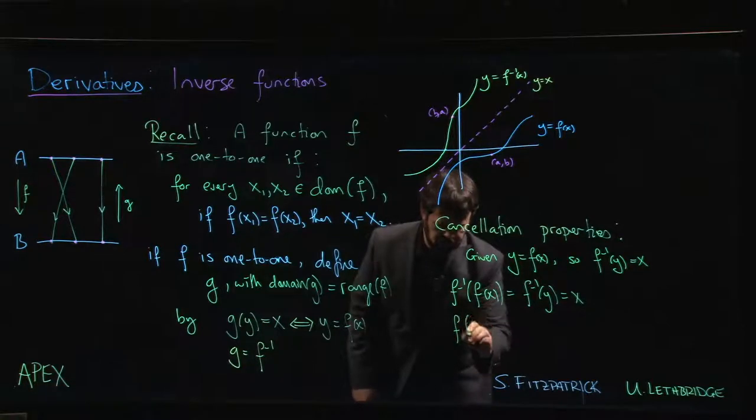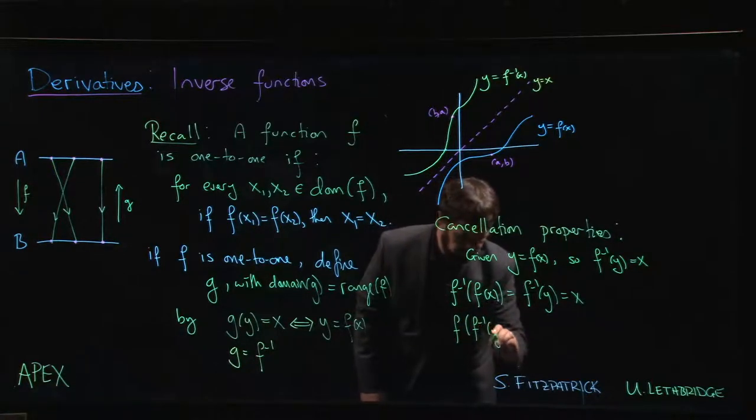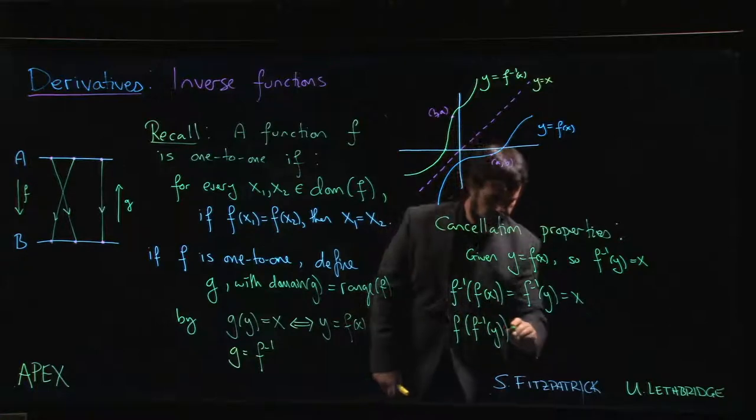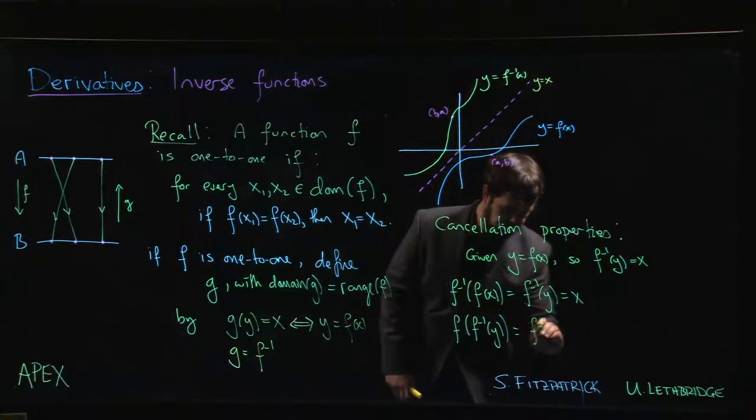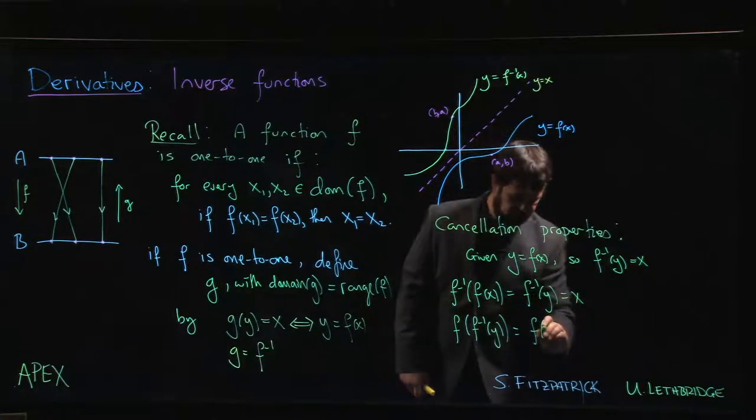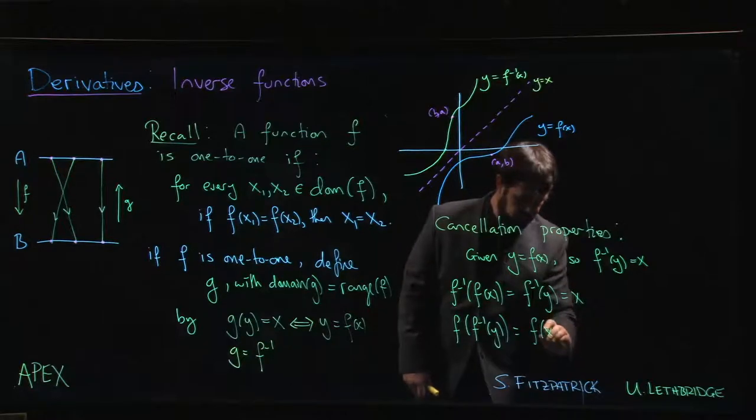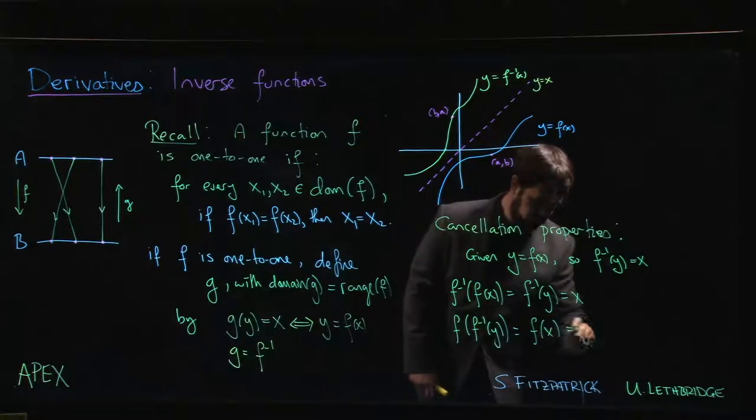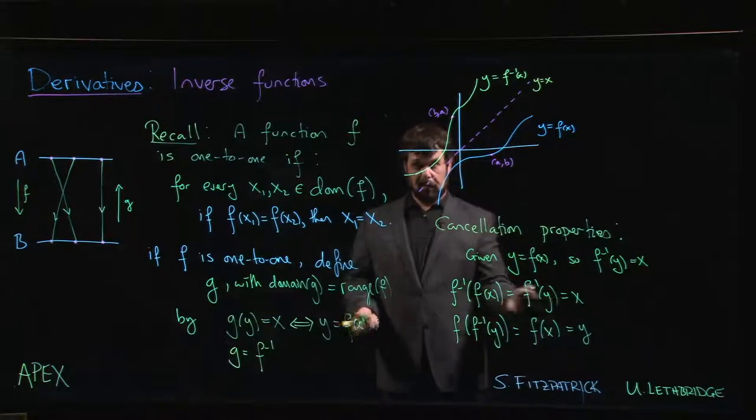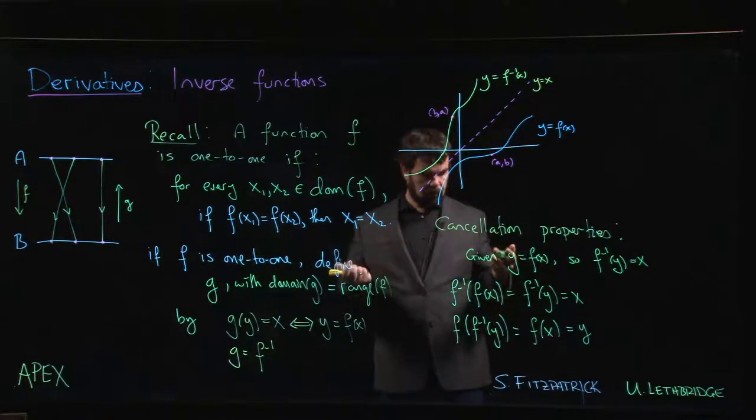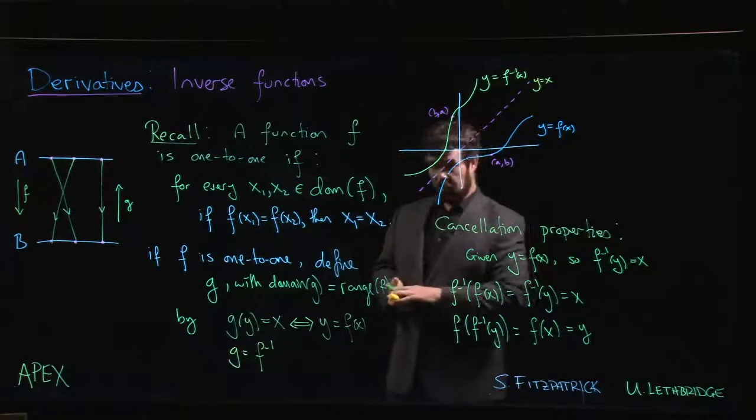And same thing in the other order. If I did f of f inverse of y, well, f inverse of y is just x, and f of x is y. So again, we see the function and its inverse, they cancel out and give you back what you started with.